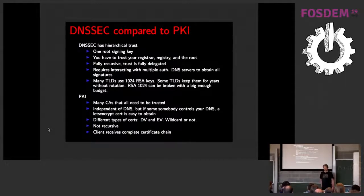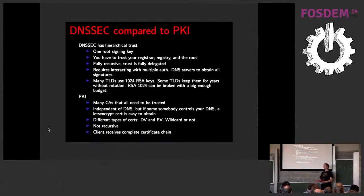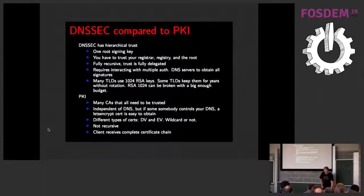DNSSEC has a practical disadvantage: you have to talk to multiple parties to obtain everything you need. You talk to your recursive resolver, but that resolver goes out and talks to many parties. PKI has solved this practically — you just get a certificate chain. Recently on the DNS OARC mailing list it came up that so many DNS zones sign with 1024-bit RSA keys. Why are we running a toy system? The web browser community was much more aggressive and said this is insecure — we're just not doing that anymore — and the world quickly deleted all insecure ciphers.